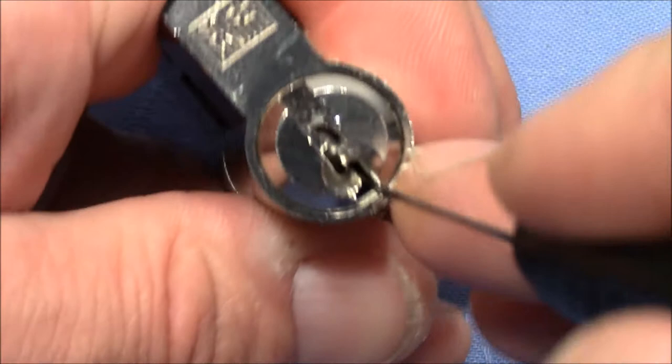But this is not the case here. When you try to use the same technique on the Winkhaus, you can see there is no way in getting this pick panned around this curve and picking the pins from the end of this keyway.